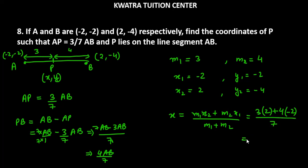So 3 into 2 is 6, 6 minus 8 over 7 can be written as -2 over 7.